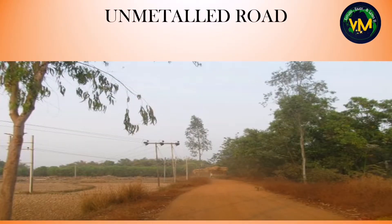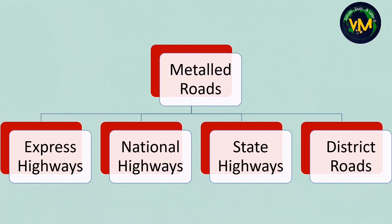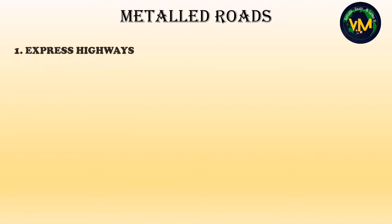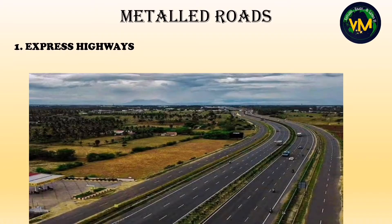Unmetalled roads are kachar roads — they are not tar roads — and they indicate that it is a village, rural, or undeveloped area. Metal roads are divided into express highways, national highways, state highways and district roads. Express highways are not found in our topographical maps G43-S7 and G43-S10. The color of expressways is purple and the symbol looks like an equal-to sign in purple color.